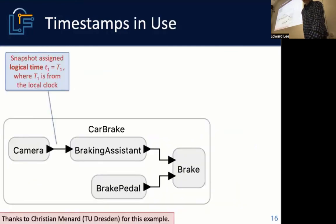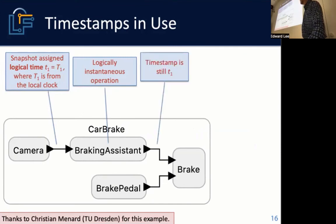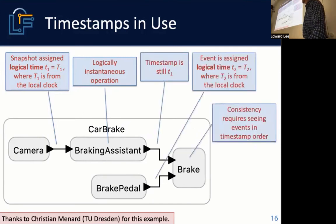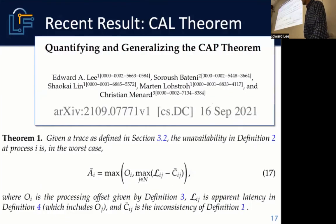In the context of the car brake system, the camera data is based on the local physical time and timestamps are derived from that. Consistency simply requires processing events in timestamp order. Enforcing consistency reduces the bandwidth.